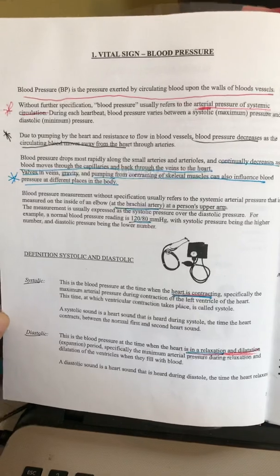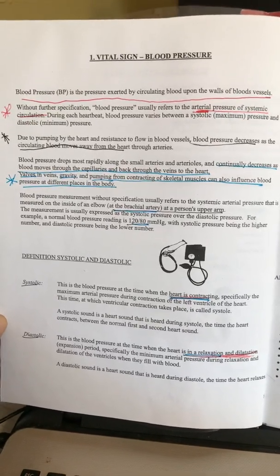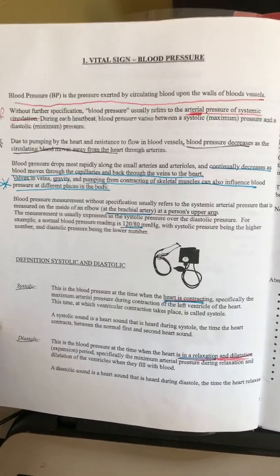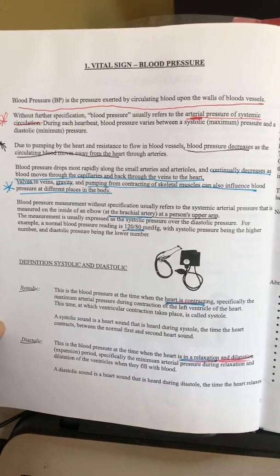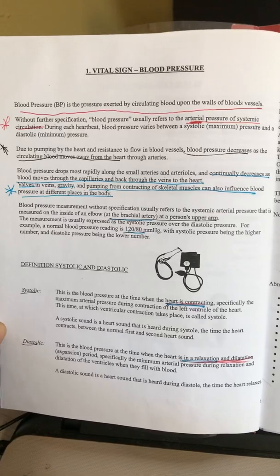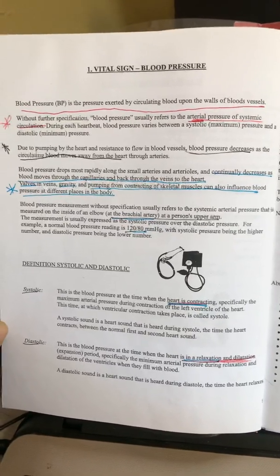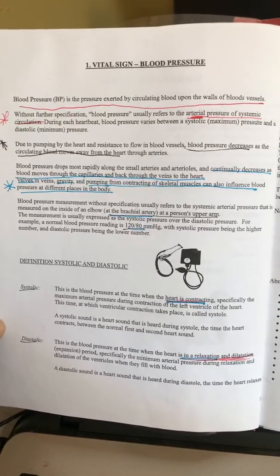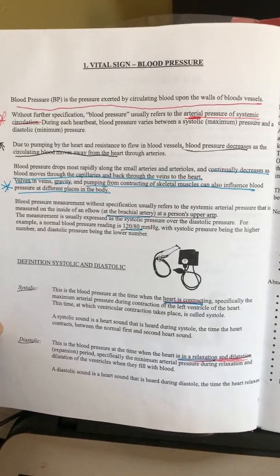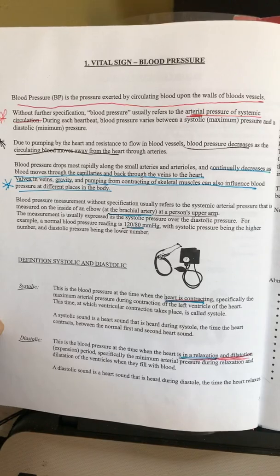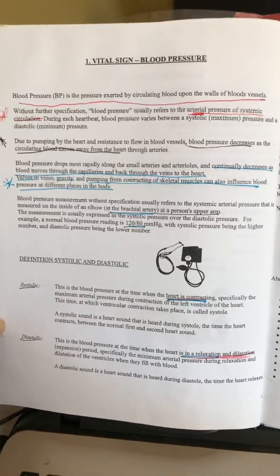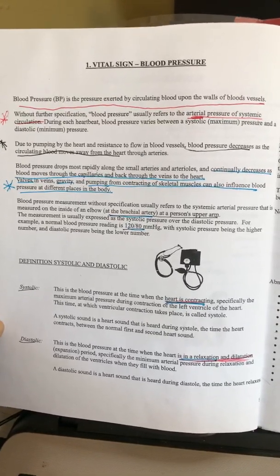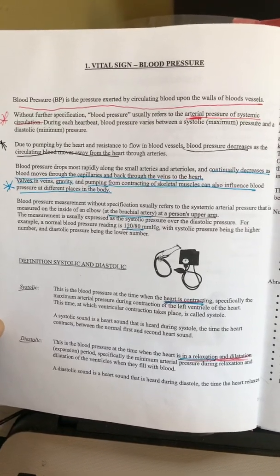Blood pressure is the pressure exerted by circulating blood upon the walls of the blood vessels. Without further specification, blood pressure usually refers to the arterial pressure of the systemic circulation. It varies between your systolic, which is the top number and your maximum, and the diastolic, which is your minimum number. When you wrap the cuff around the arm, the first heartbeat you hear will be your systolic and the second is diastolic.